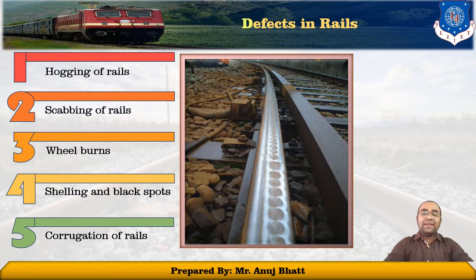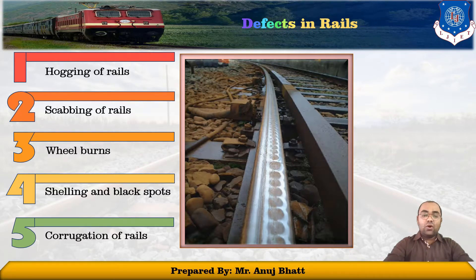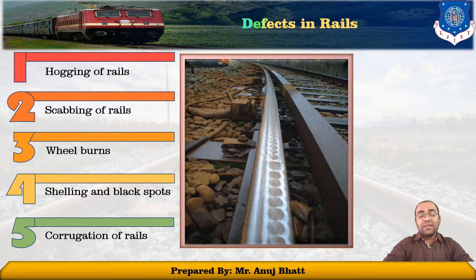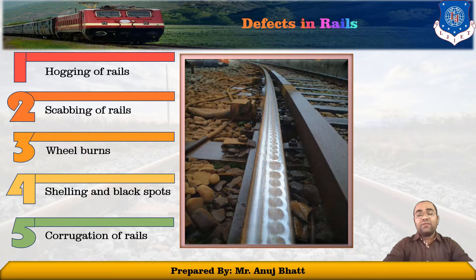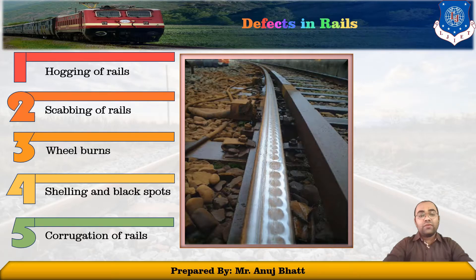Corrugation can be removed by grinding the rail head by a fraction of a millimeter. The problem of corrugation has been tackled in great detail on German railways, where two types of equipment are normally used for rail grinding. Such grinding makes the upper surface of the rails very smooth so that noise is not produced. So, these are the five defects of rails: hogging of rails, scabbing of rails, wheel burns, shelling and black spot, and corrugation of rails.